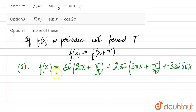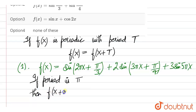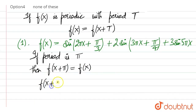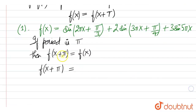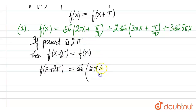If the period of this function is 2π, then f(x + 2π) should be equal to f(x). So putting x + 2π in place of x, this becomes sin of (x + 2π + π/3).